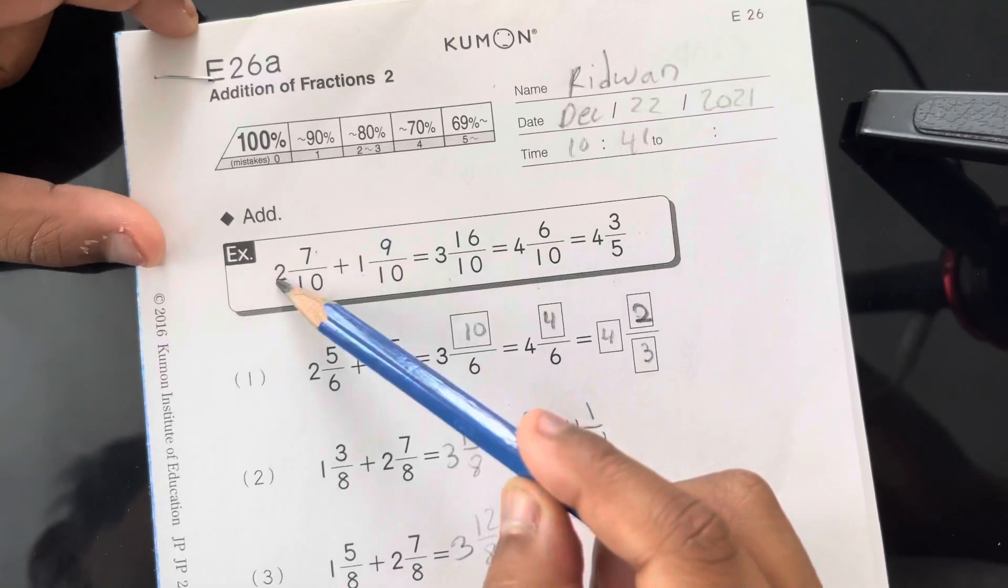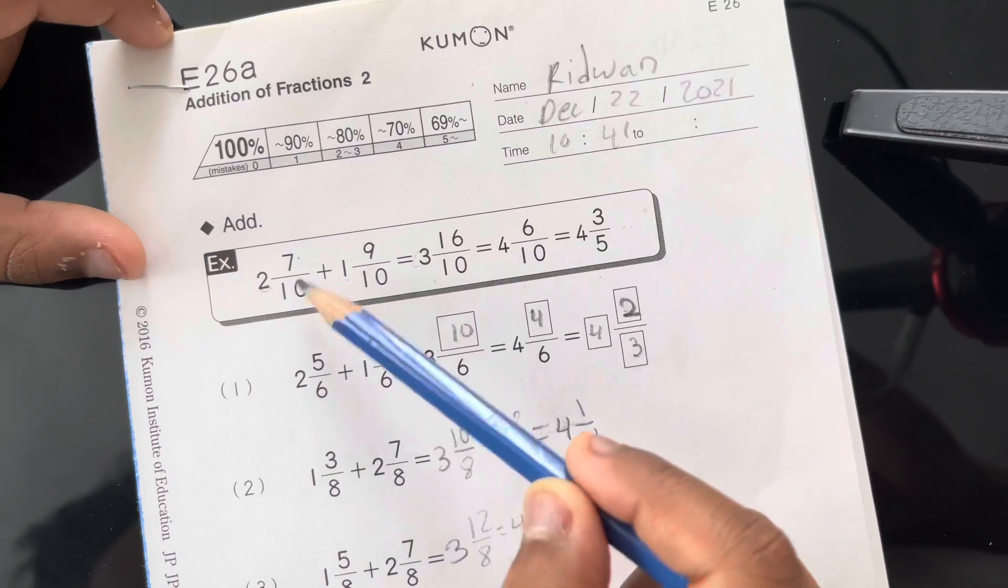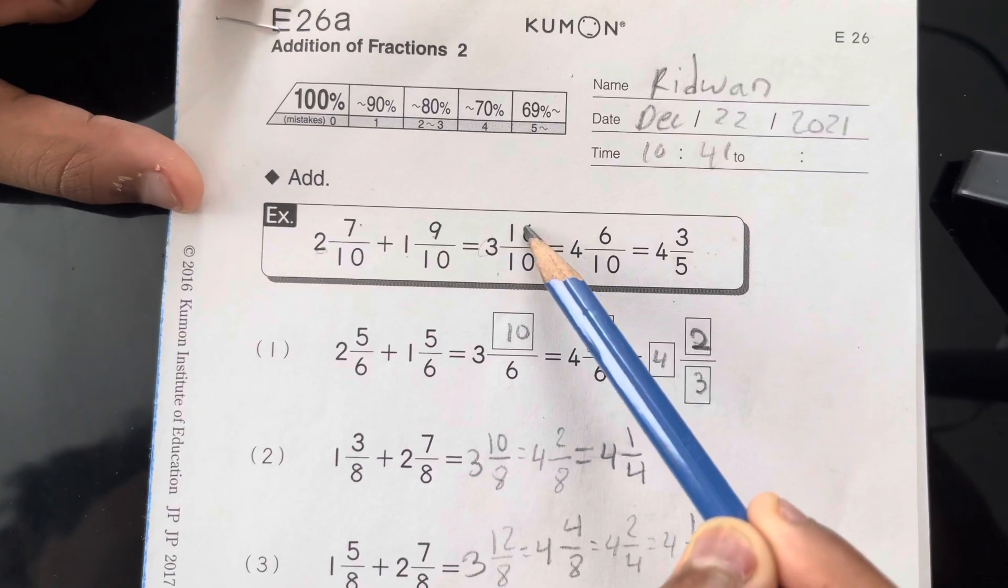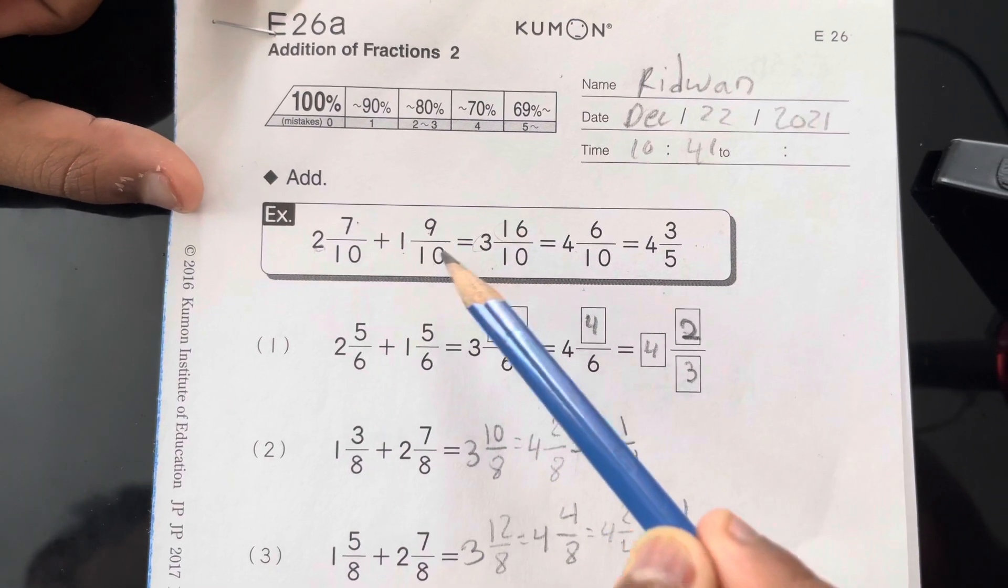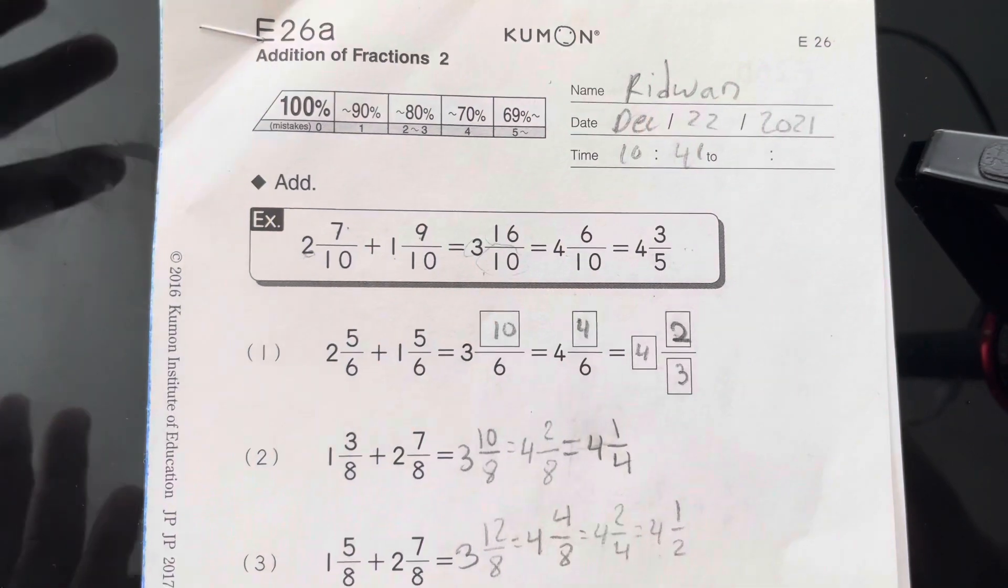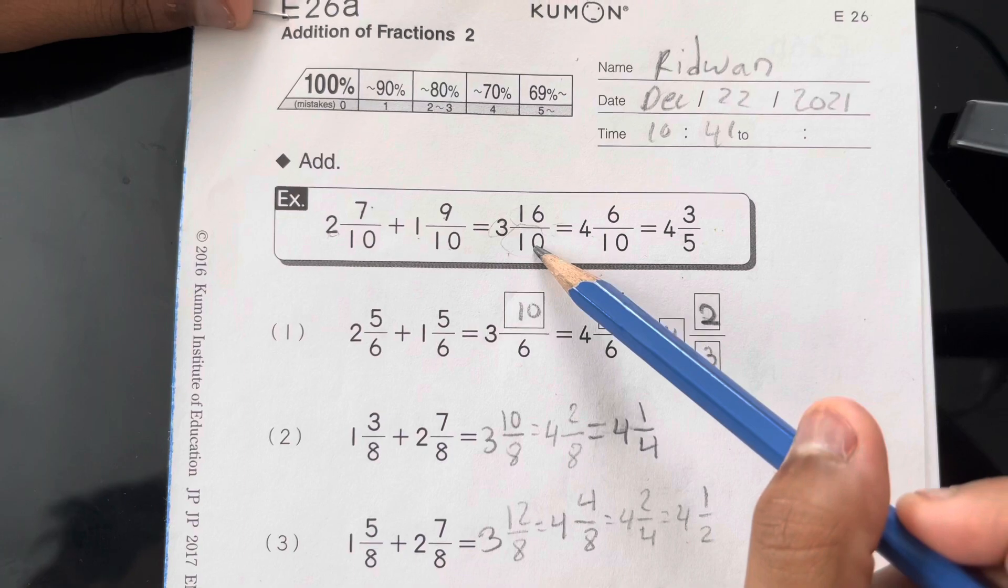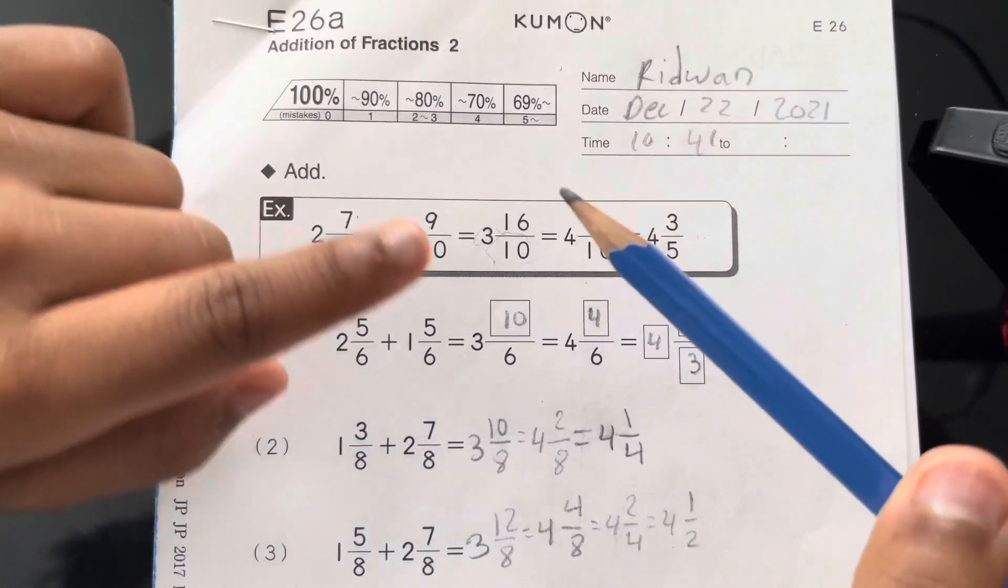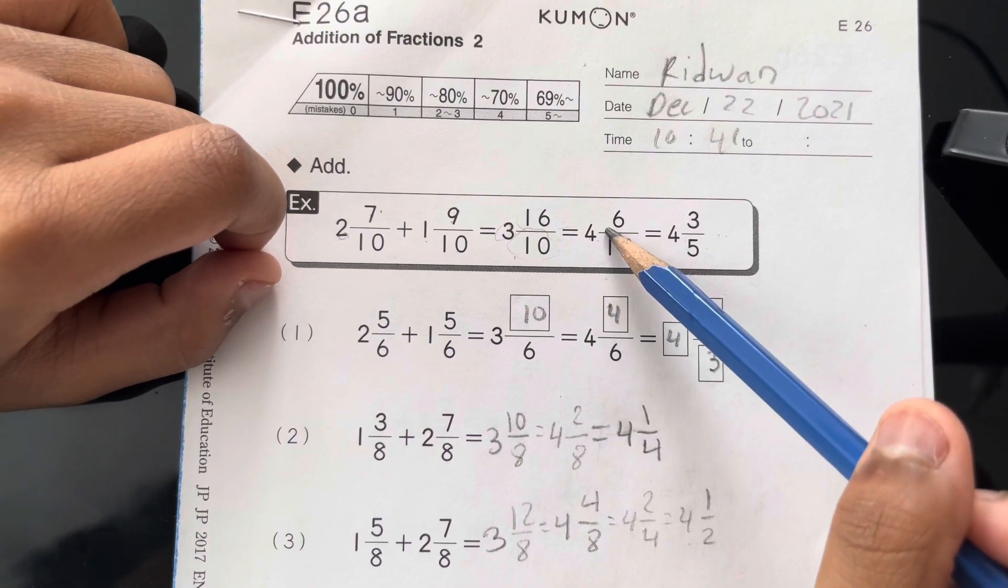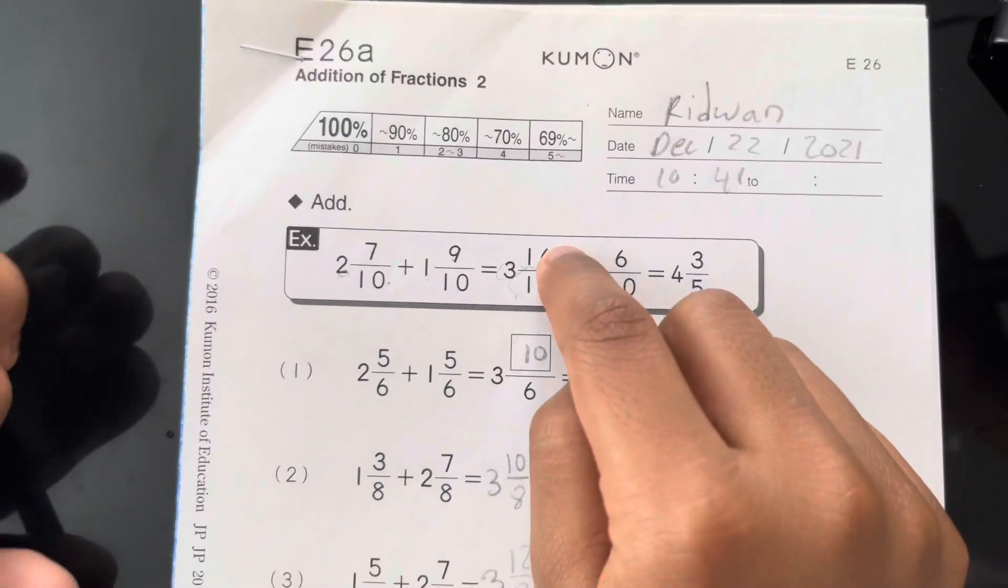Like this: 2 plus 1 equals 3, put the 3 here. 7 plus 9 equals 16, you put it here. 10 and 10, you put 10 here because it stays the same. Again, and then equals 4 because 10 goes into 16 one time, so 1 plus 3 equals 4, and then 16.